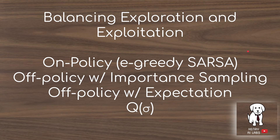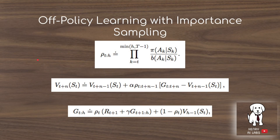Now that we've seen n-step TD learning, we'll discuss different ways to balance exploration and exploitation: an on-policy approach like epsilon-greedy n-step SARSA, off-policy with importance sampling, off-policy with expectation, and the Q-sigma algorithm, which unifies sampling and expectation to trade off exploration and exploitation in n-step TD learning.